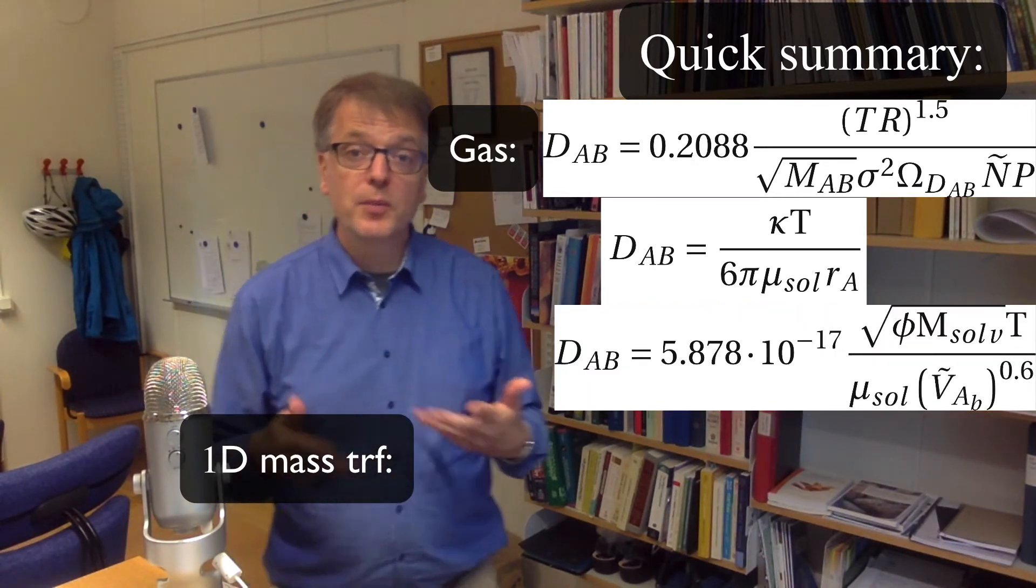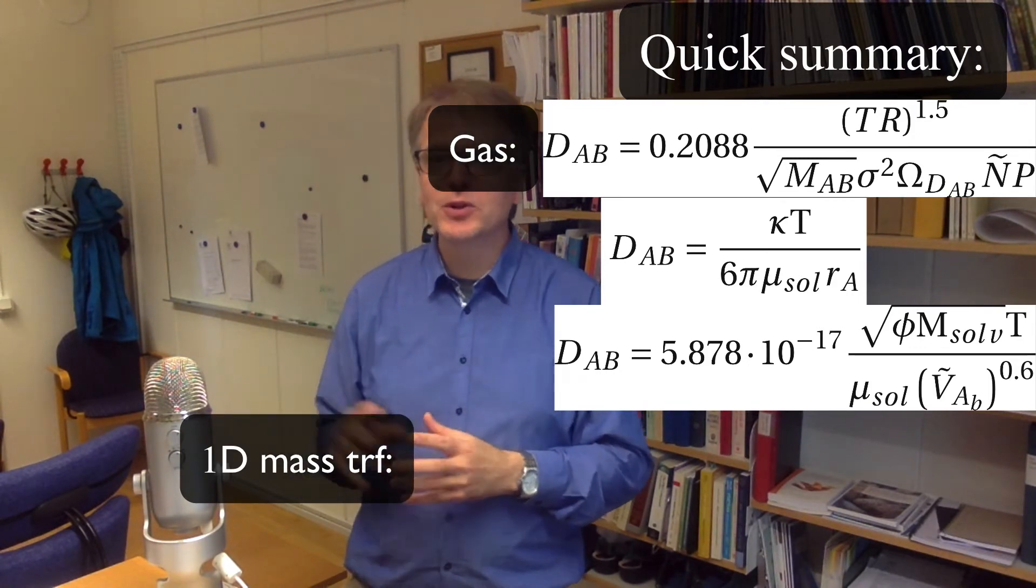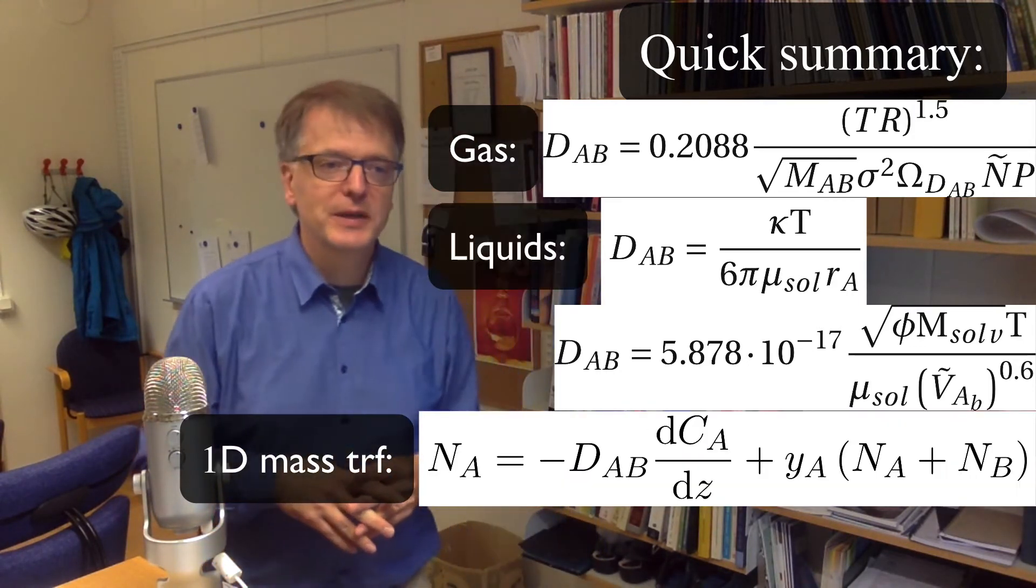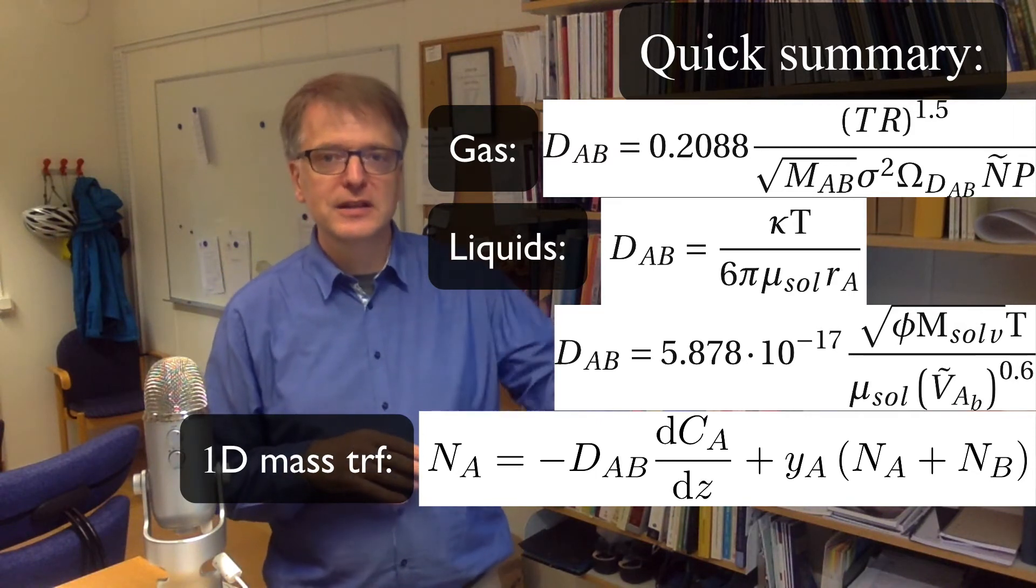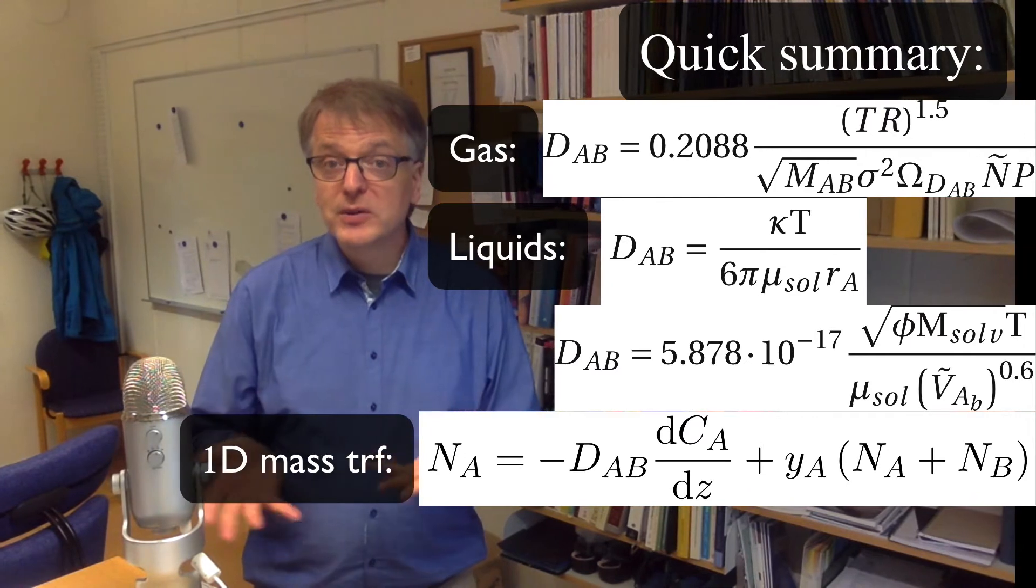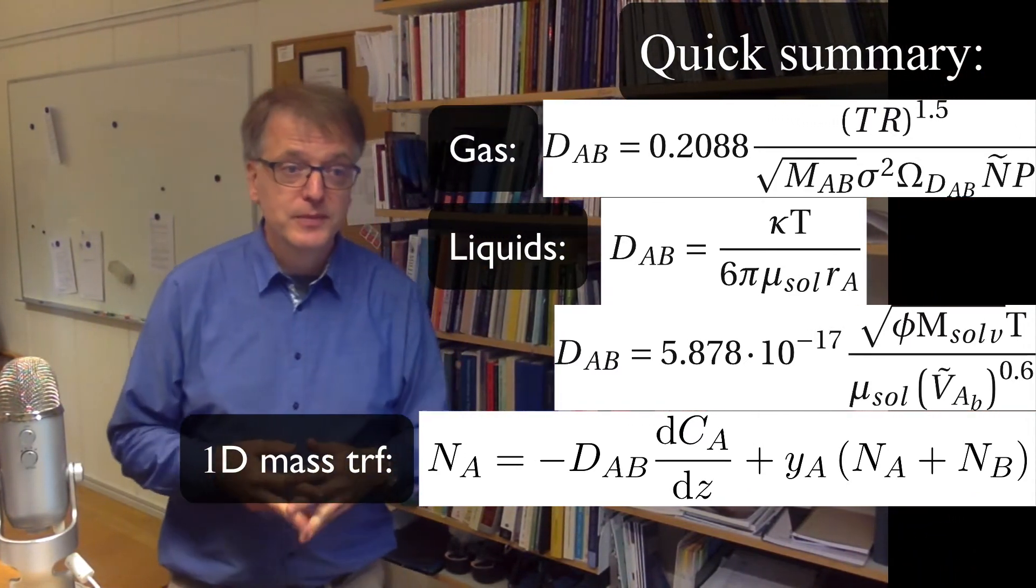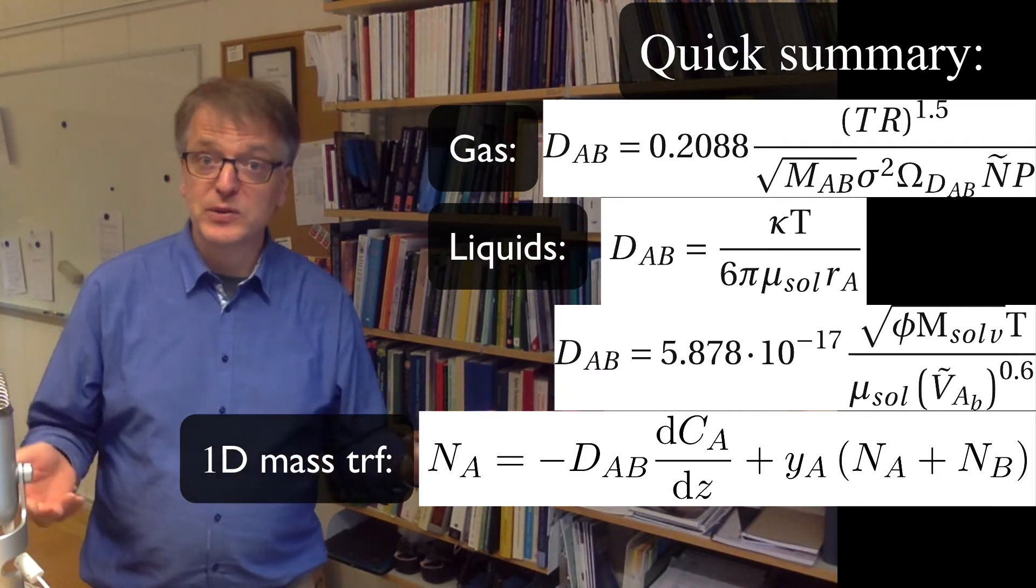And then we talked about mass transport in one dimension. I didn't actually say that we talked about one dimension but we only talked about one dimension. And then we said that it's this equation here and we found out that there are two special cases that are rather simple compared to other things we could imagine.